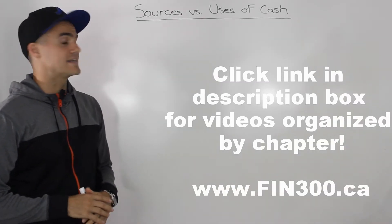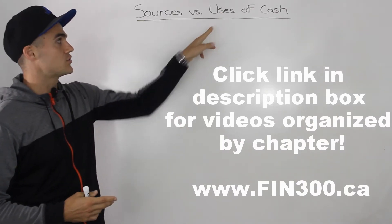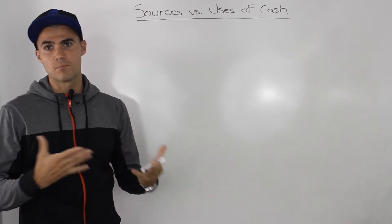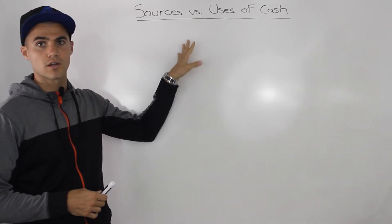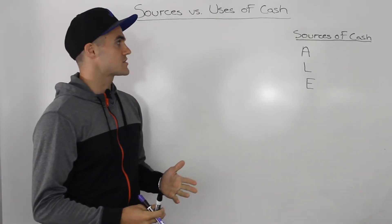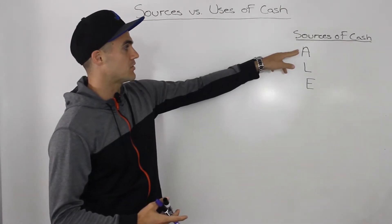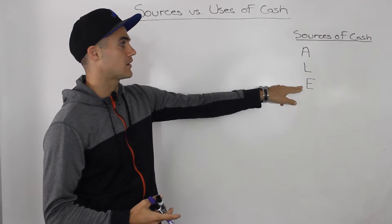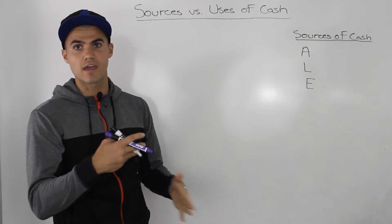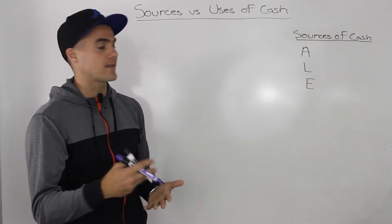In this question, we're going to be identifying whether certain scenarios are sources or uses of cash. But before we get into that, I want to give you a brief overview or a mini lecture on how each of these work. When you're talking about sources and uses of cash, you're basically going to be looking at the balance sheet accounts — assets, liabilities, and equity. Depending on how they change, whether they increase or decrease, that's going to tell you whether something's a source or a use of cash.